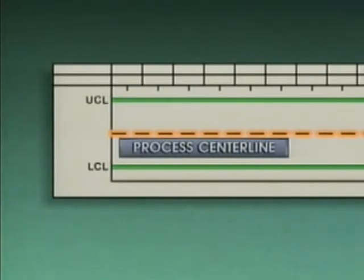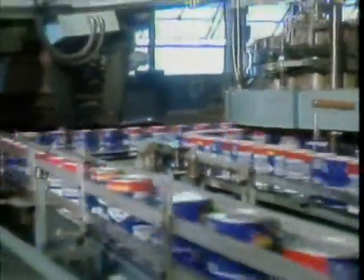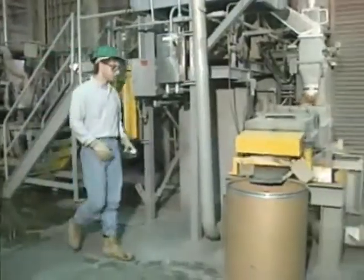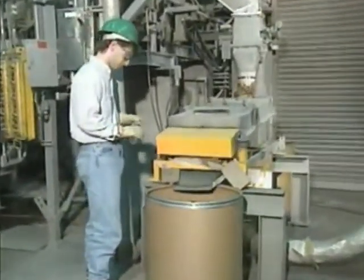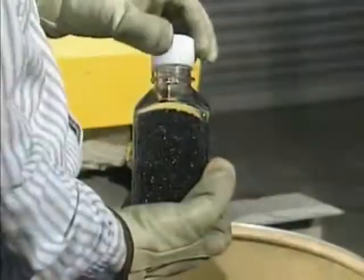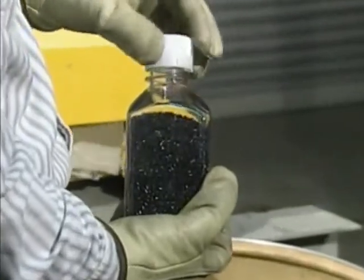The horizontal axis of a C-chart represents time — in this case, the process is sampled every hour. For other applications, sampling might be based on the amount of product produced, such as every tenth container. The vertical axis represents the number of defects per sample. The sampling size for an attribute chart is based on the number or amount of product samples needed to determine a data point, and it is constant for a particular application.